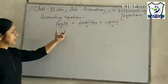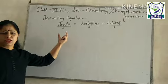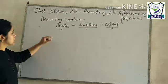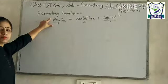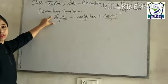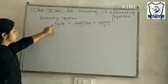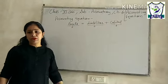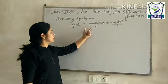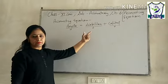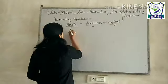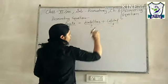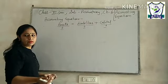So after every transaction, the accounting equation will remain the same. The total of assets will always equal the total of liabilities plus capital. The total will always be the same.